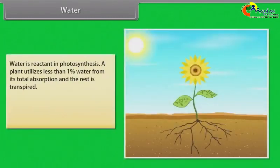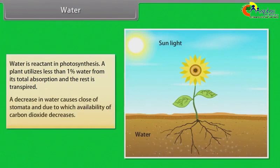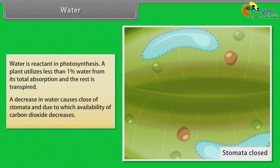Water: Water is a reactant in photosynthesis. A plant utilizes less than 1% of water for its total absorption and the rest is transpired. A decrease in water causes closure of stomata, and due to this, availability of carbon dioxide decreases.